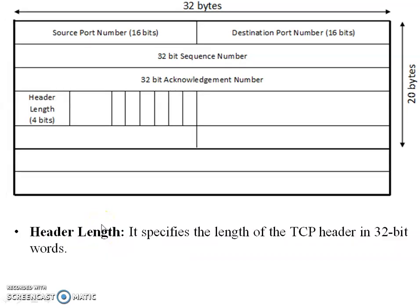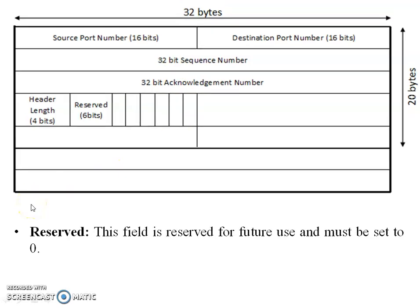The next header length field specifies the length of the TCP header in 32-bit words — it is the overall length of the header. Next are the reserved bits, which are mostly used for future use and must be set to zero, so their initial value is always zero.